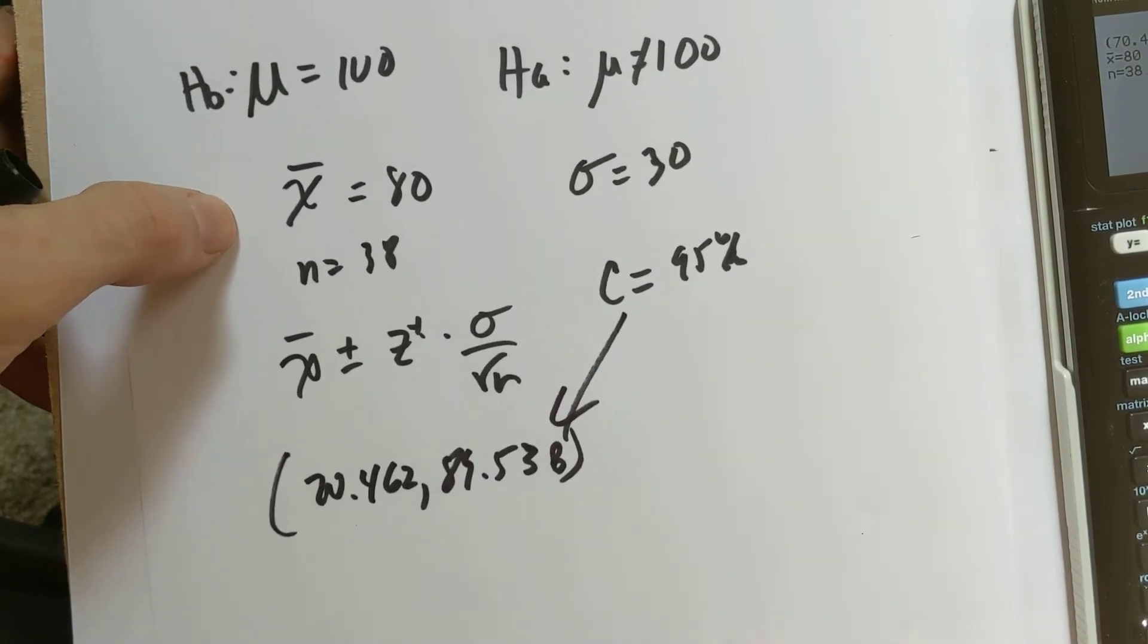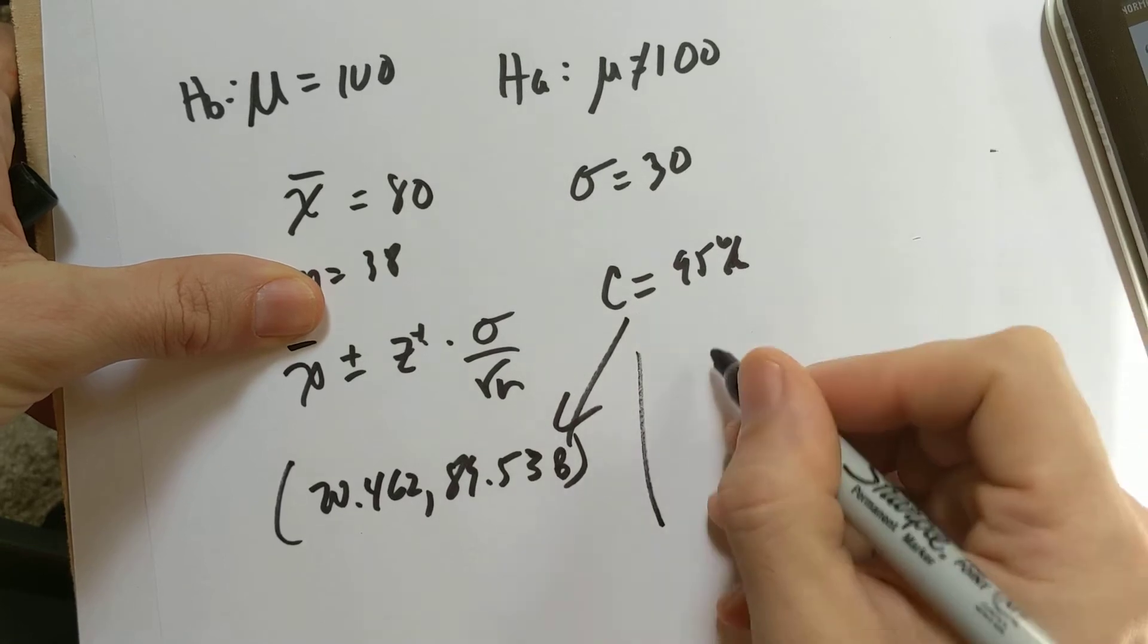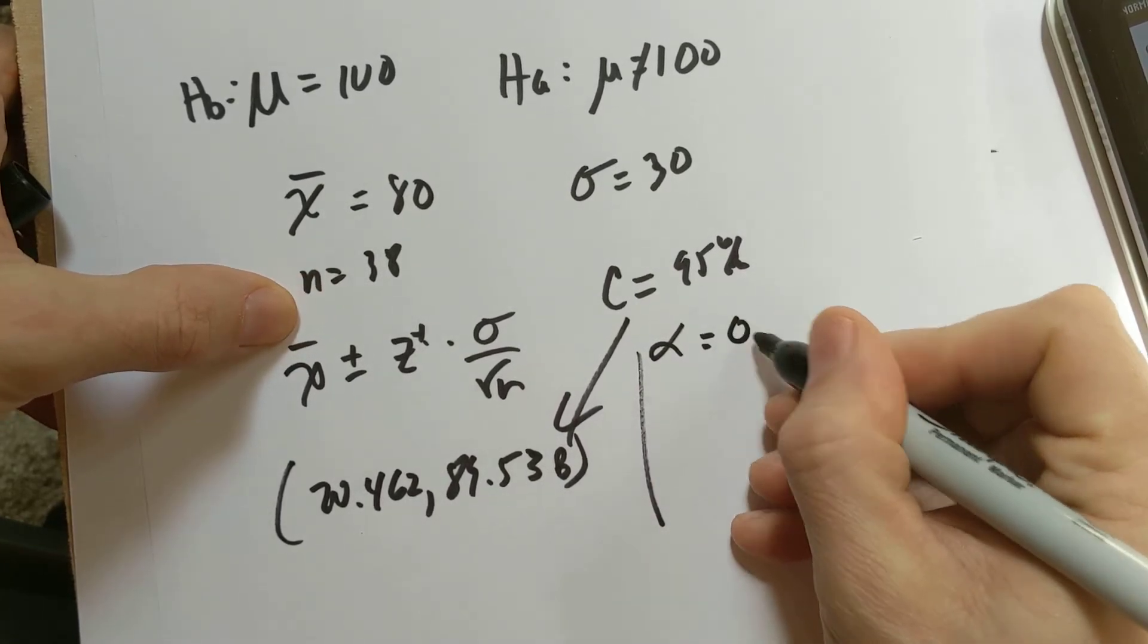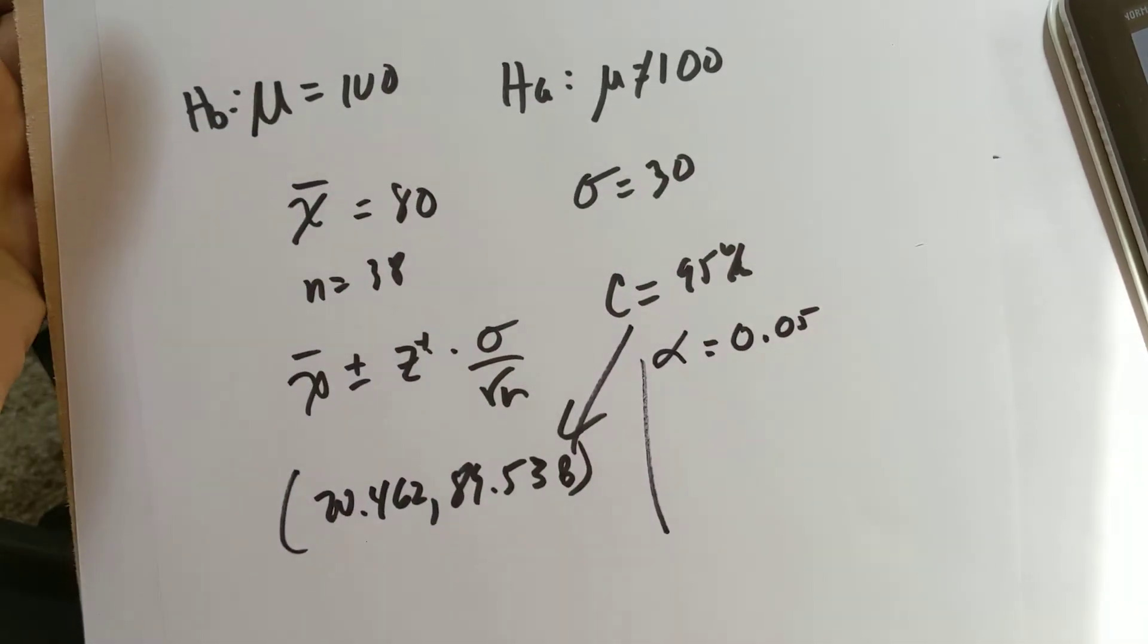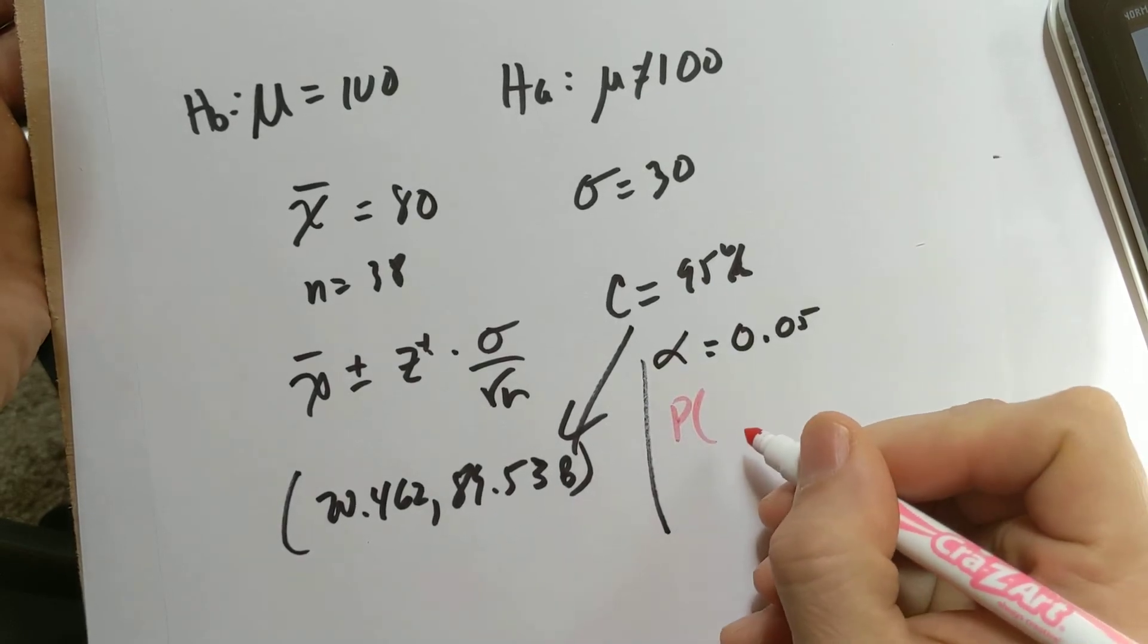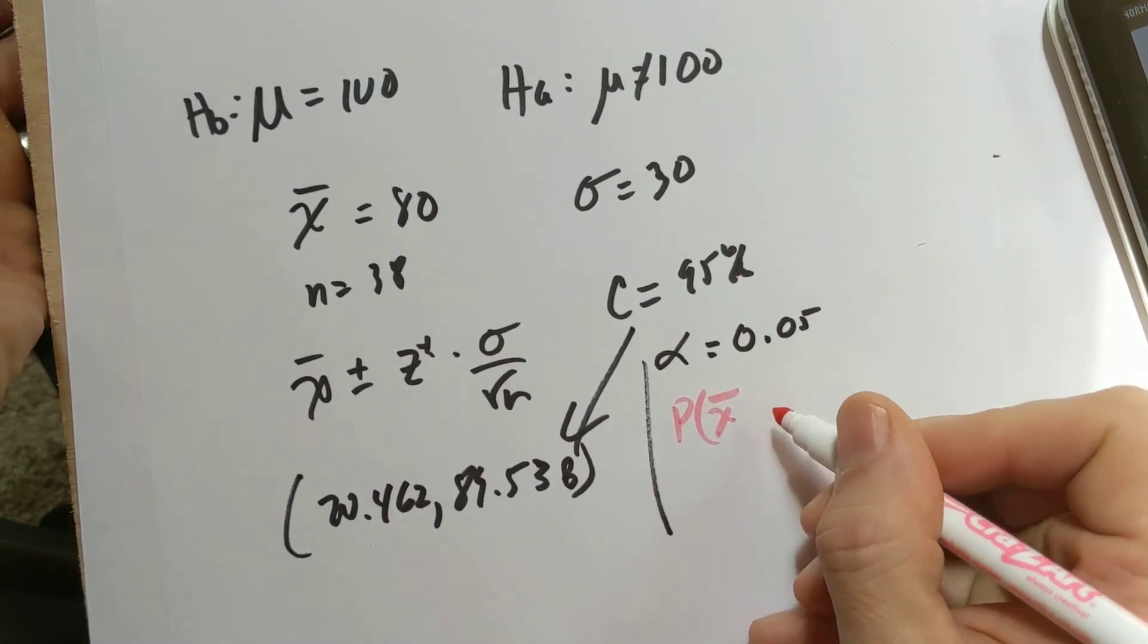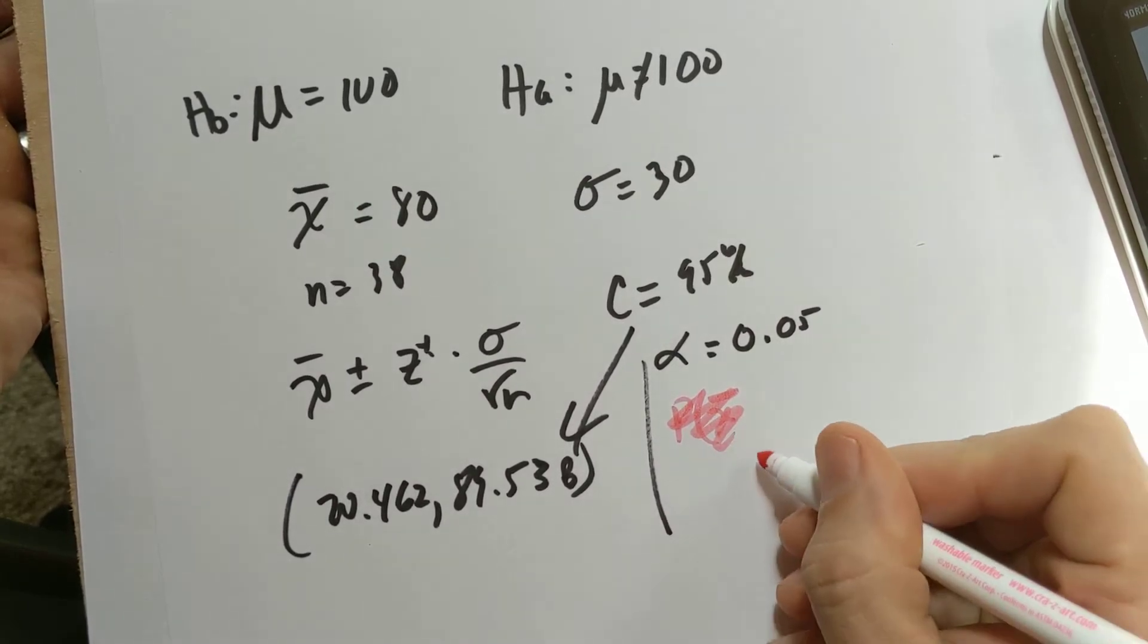What if we did calculate a p-value? The associated level of significance ought to be alpha equals 0.05. This will be a two-tail test. To calculate our p-value, we want to know the probability that we'll get an x-bar that's, well, we've got to change this to z-scores. Let's first find the z-score.